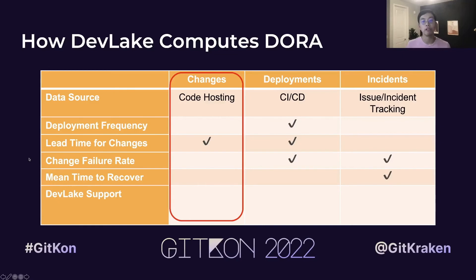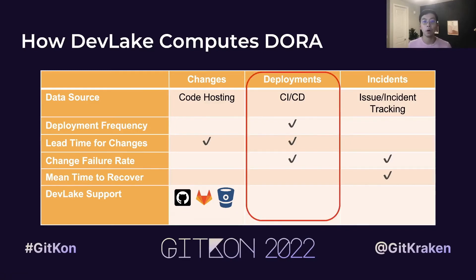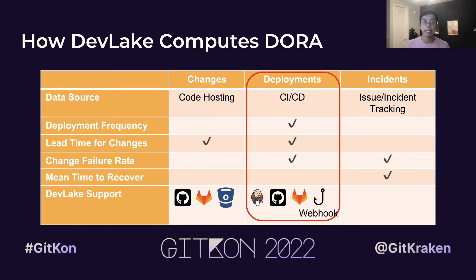DevLake can pull changes from your code hosting systems like GitHub, GitLab, and Bitbucket. The deployment entity is needed for almost all DORA metrics and usually comes from your CI/CD tools. DevLake allows users to select specific pipelines from Jenkins, GitHub Actions, and GitLab CI as deployments.